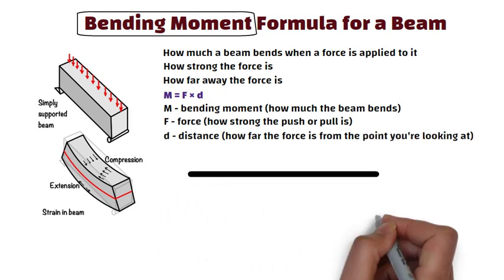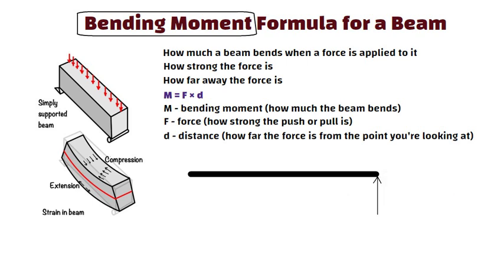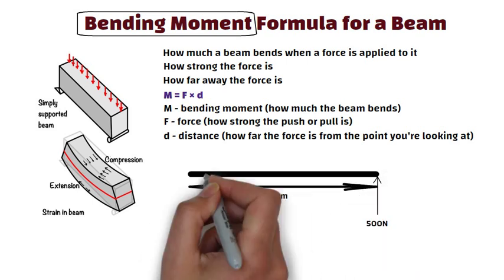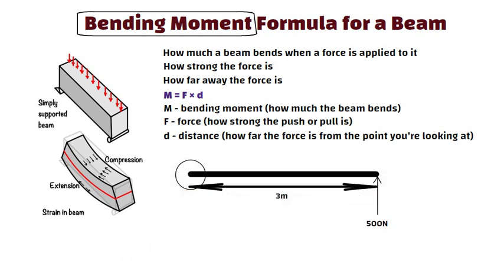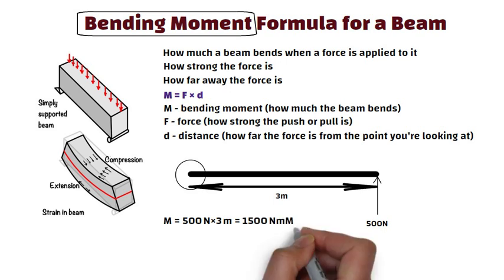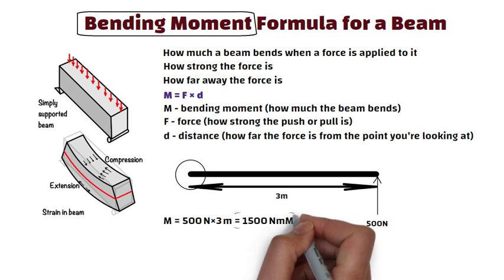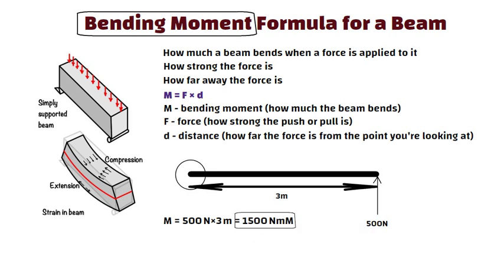Imagine a beam with a 500 Newton force pushing on it 3 meters from the left side. To find the bending moment at that point: M is equal to 500 into 3 is equal to 1500 Newton meter. The bending moment is 1500 Newton meter. This means the beam is bending a lot at that point because of the force.